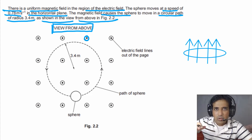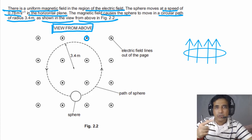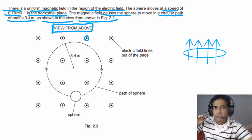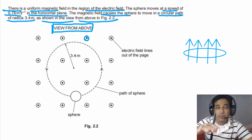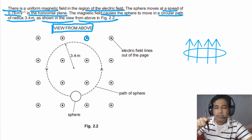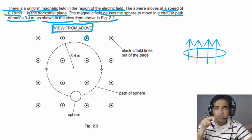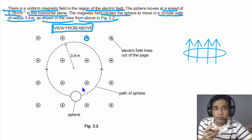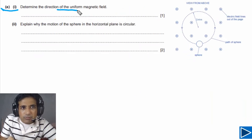The particle is moving in a horizontal plane, which means there is a net force forcing this particle to do circular motion. If there were no net force, the body would continue moving in a straight line with constant speed. Since the particle is moving in a circle, there must be a resultant force acting on it in the horizontal plane, and that force is the magnetic force.